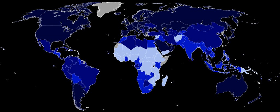The 2016 Human Development Report by the United Nations Development Programme was released on 21 March 2017 and calculates HDI values based on estimates for 2015. The number in parentheses represents the number of ranks the country has climbed, up or down, relative to the ranking in the 2015 report.